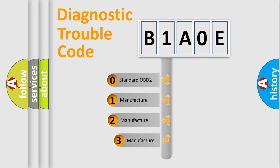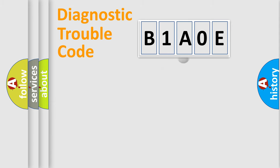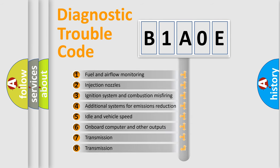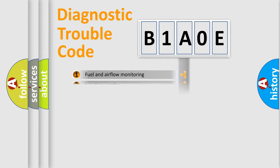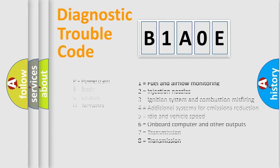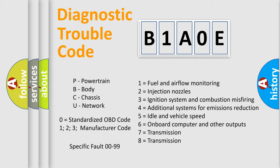If the second character is expressed as zero, it is a standardized error. In the case of numbers 1, 2, 3, it is a manufacturer-specific expression of the car error. The third character specifies a subset of errors. The distribution shown is valid only for the standardized DTC code. Only the last two characters define the specific fault of the group. Let's not forget that such a division is valid only if the second character code is expressed by the number zero.